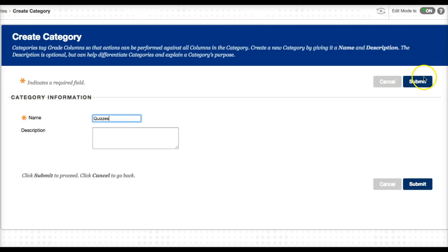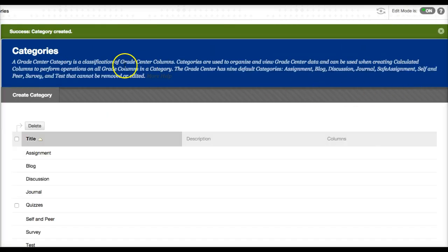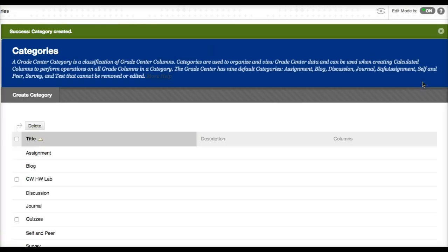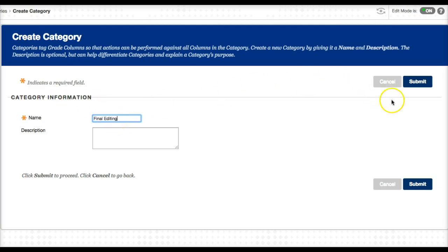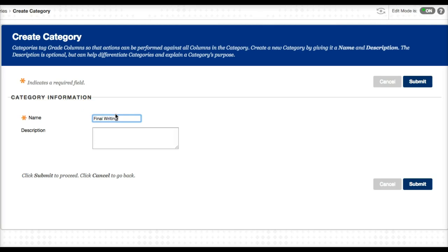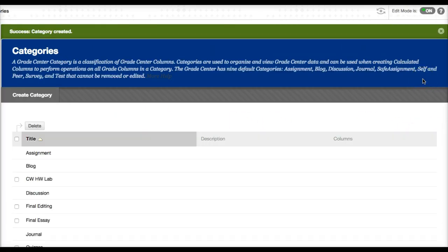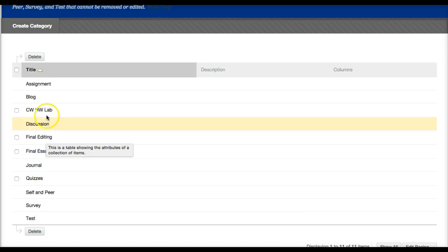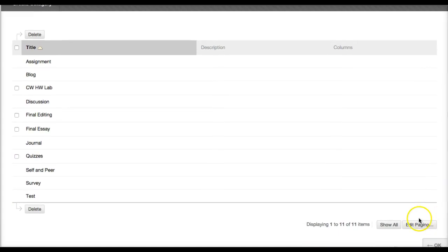We'll go to create category: quizzes, submit. Create categories: classwork, homework, lab, and then we have the final exam, the two-part final exam. So now you can see my categories. We have the test category, quiz category, homework, classwork homework lab category, and we have our final exam, final editing, and the final essay. And I'll go down here and click on OK.